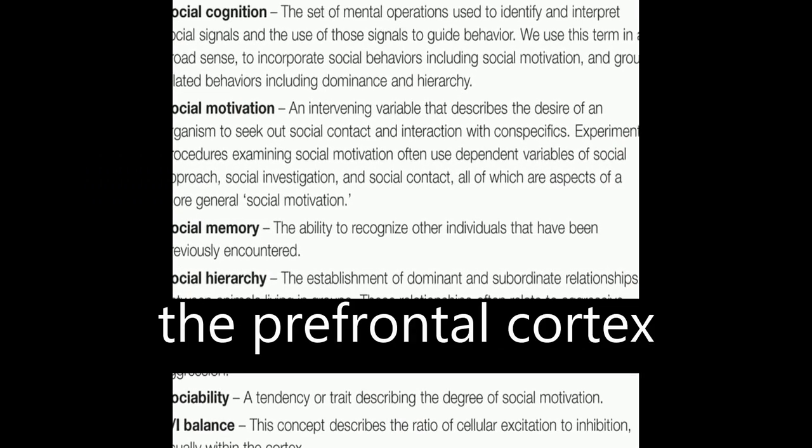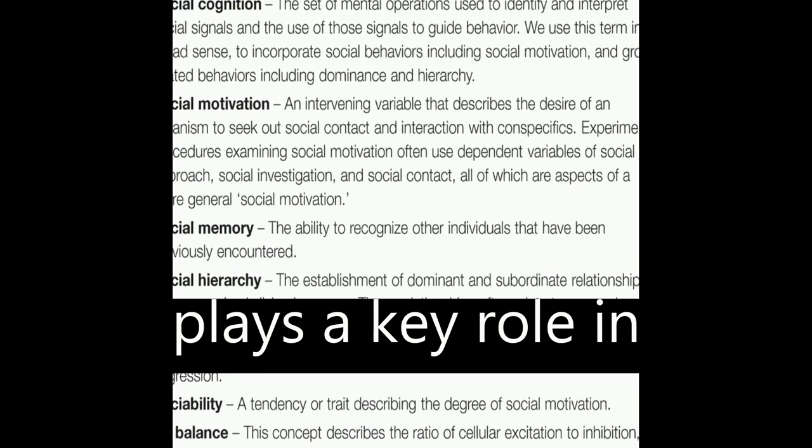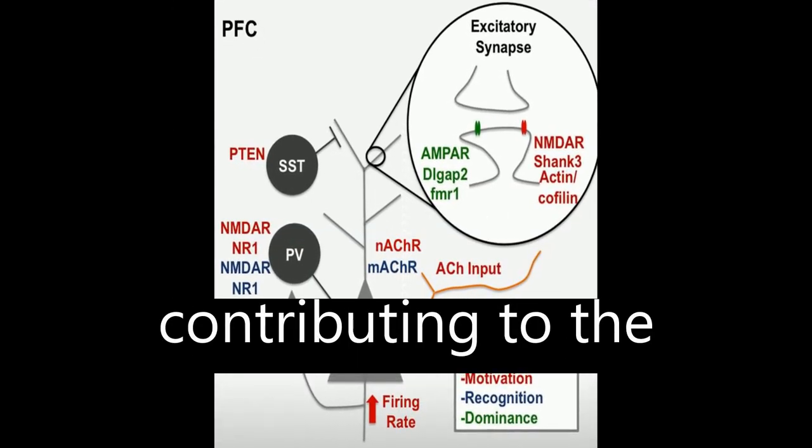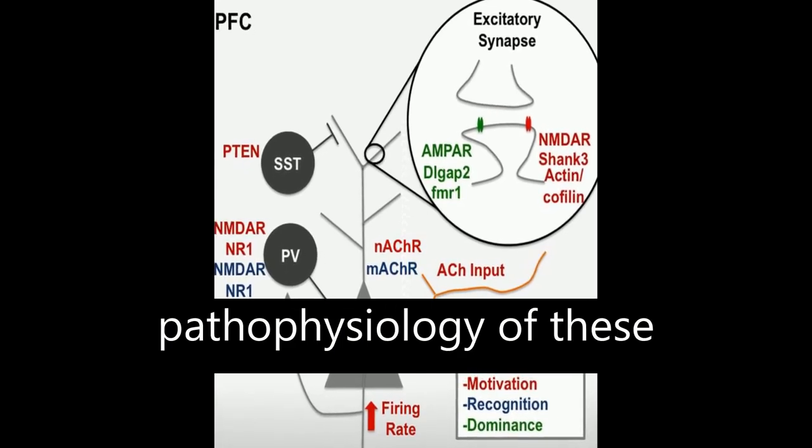The article suggests that the prefrontal cortex plays a key role in regulating social cognition, with disruptions in prefrontal microcircuitry contributing to the pathophysiology of these disorders.